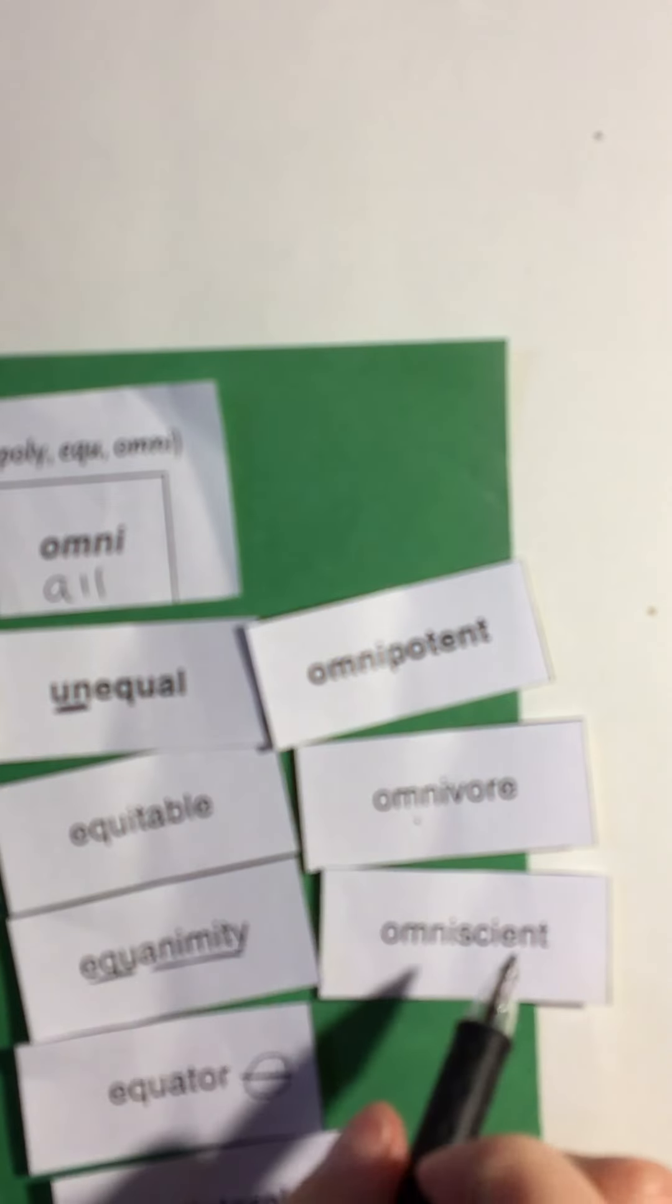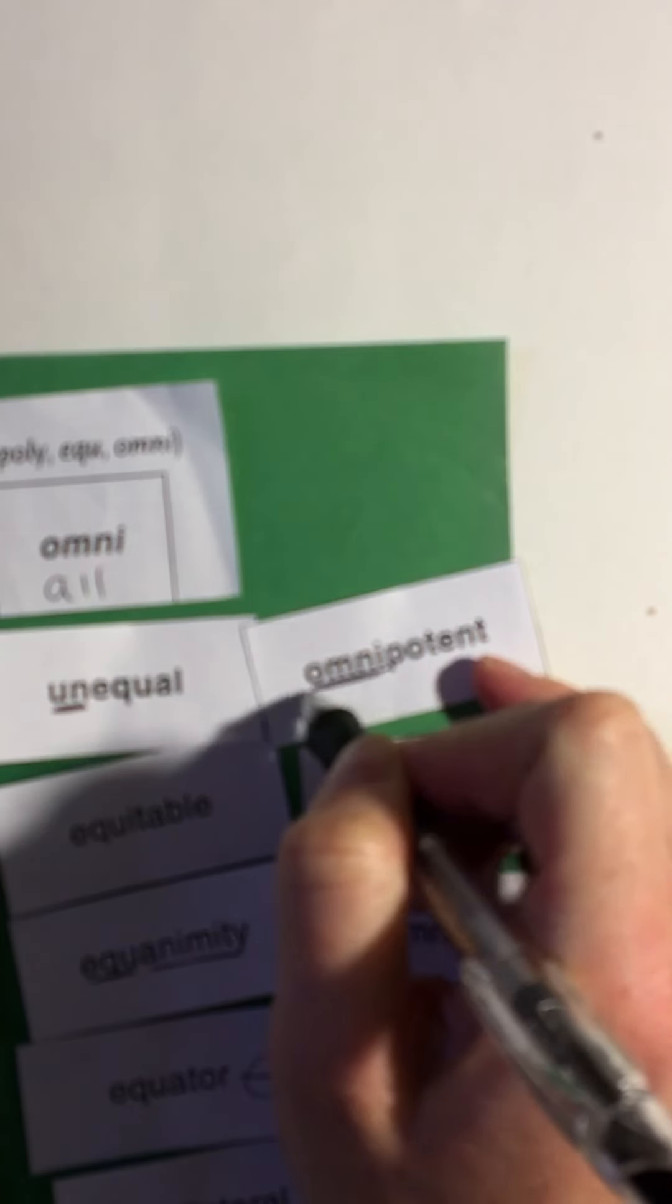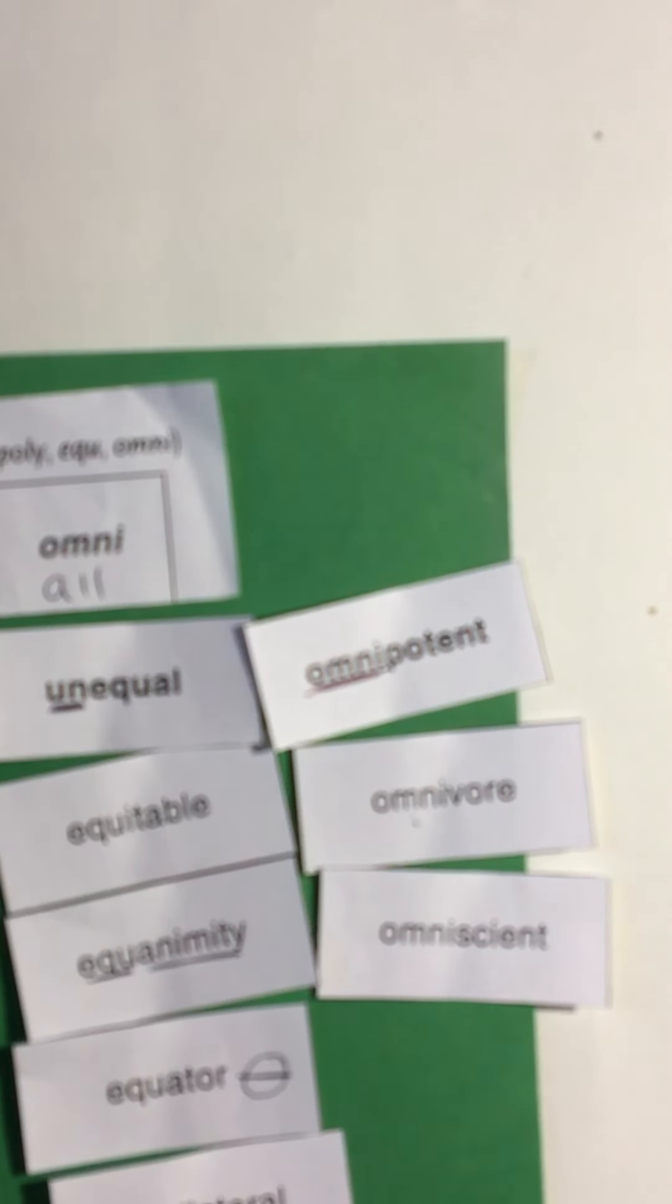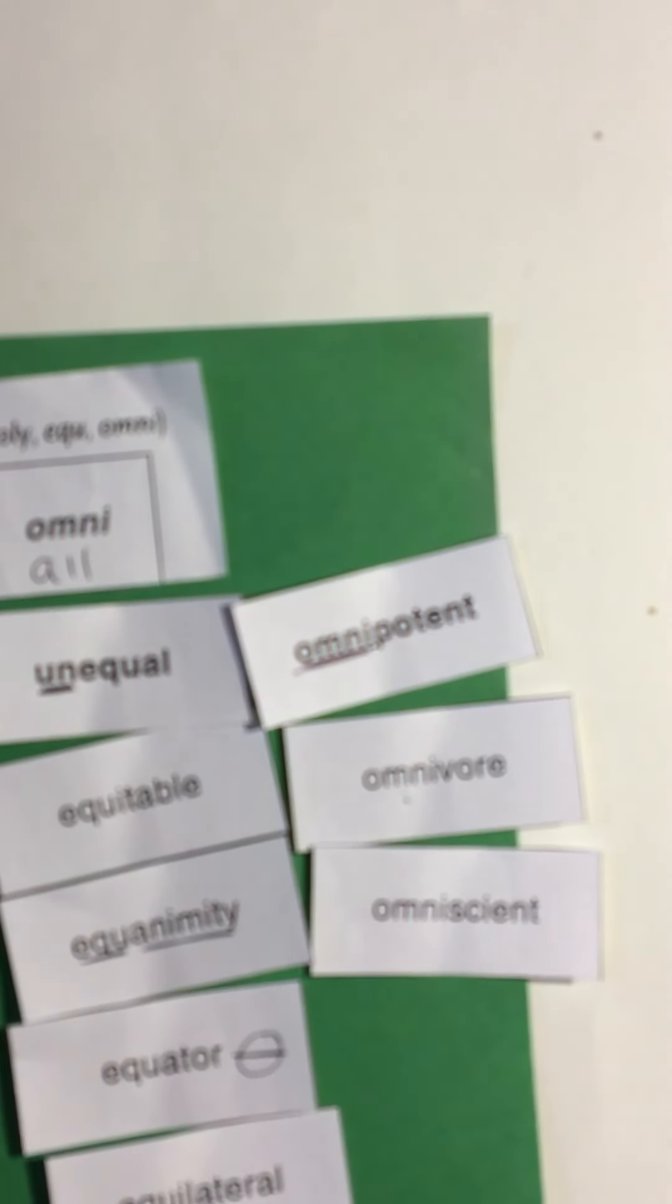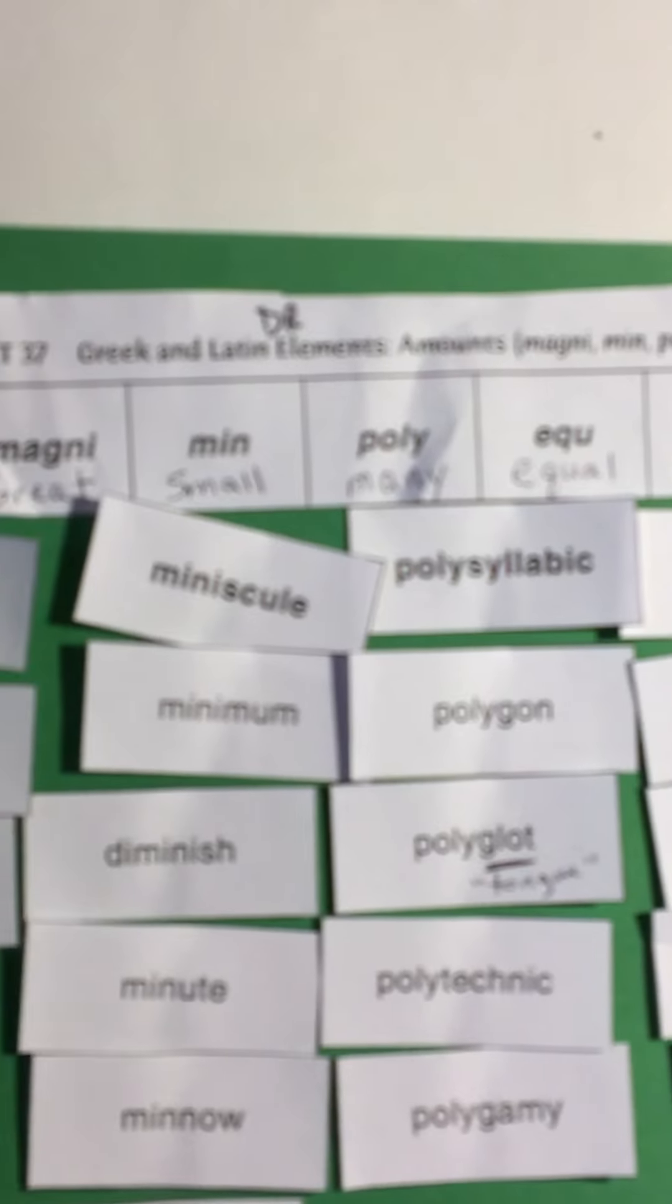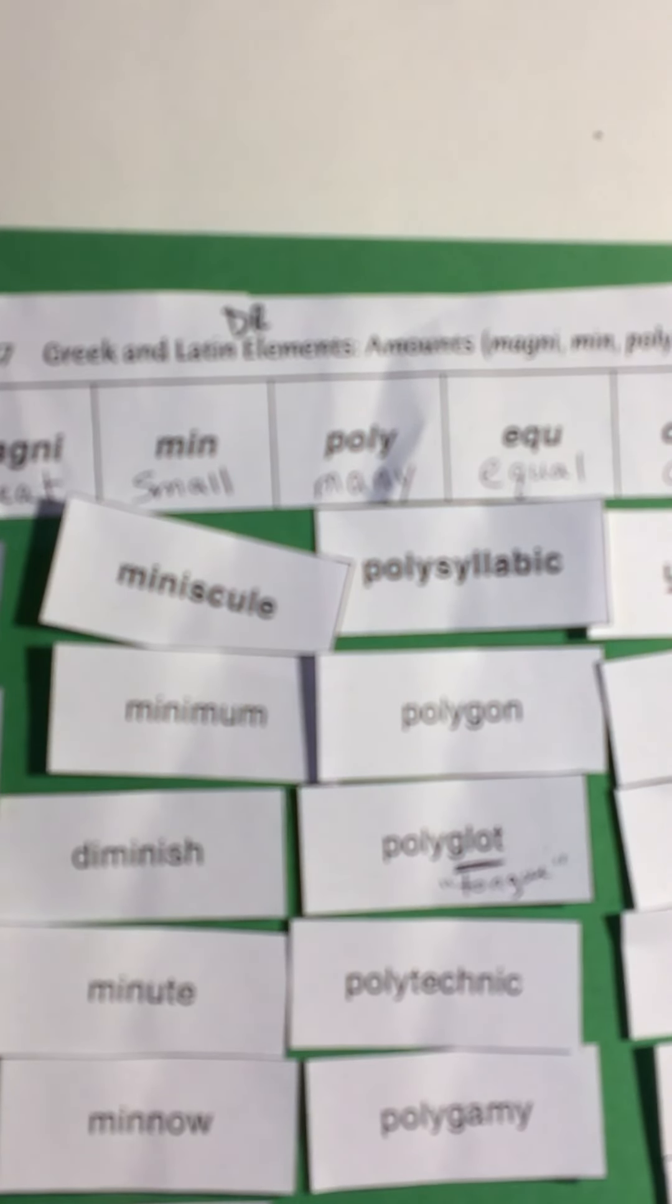And then we have omnipotent. I'm gonna let you look that one up. Sometimes I have to look up words too, so whenever we come to a word that you don't know, please look it up. Alright, so write down what the meanings of these elements are on your sort record.